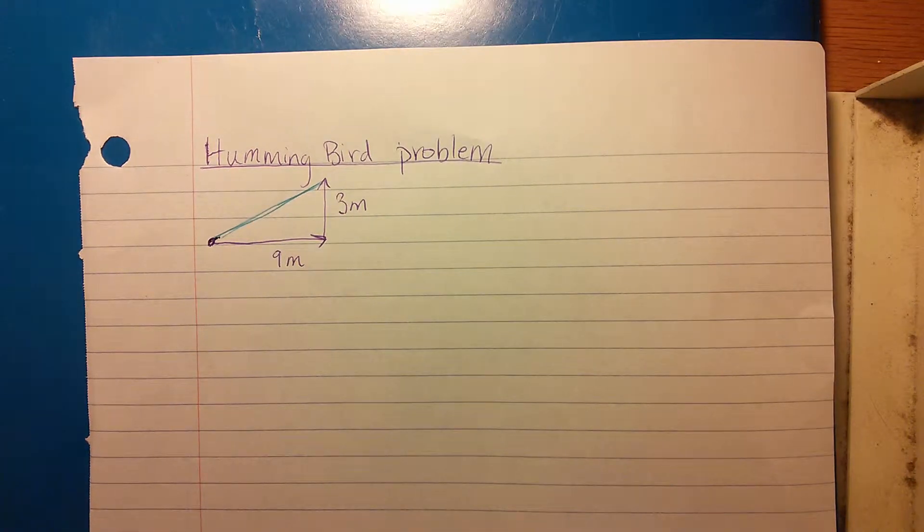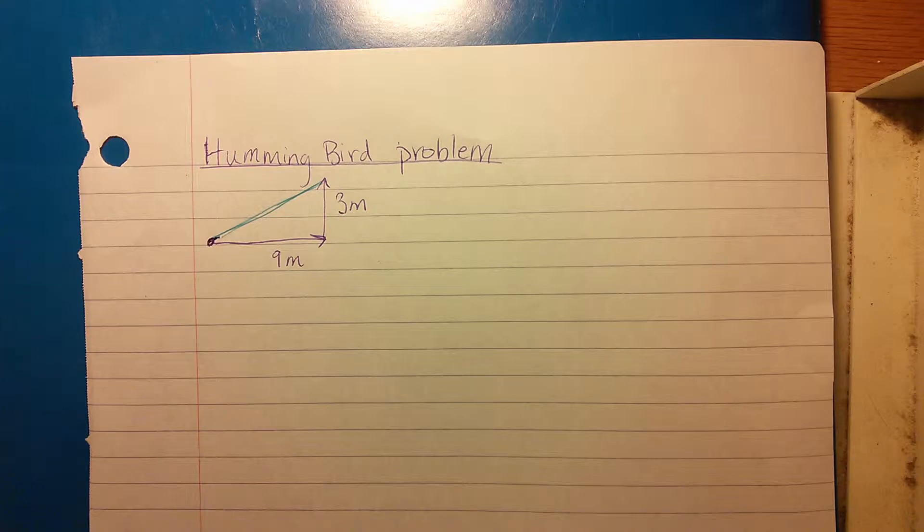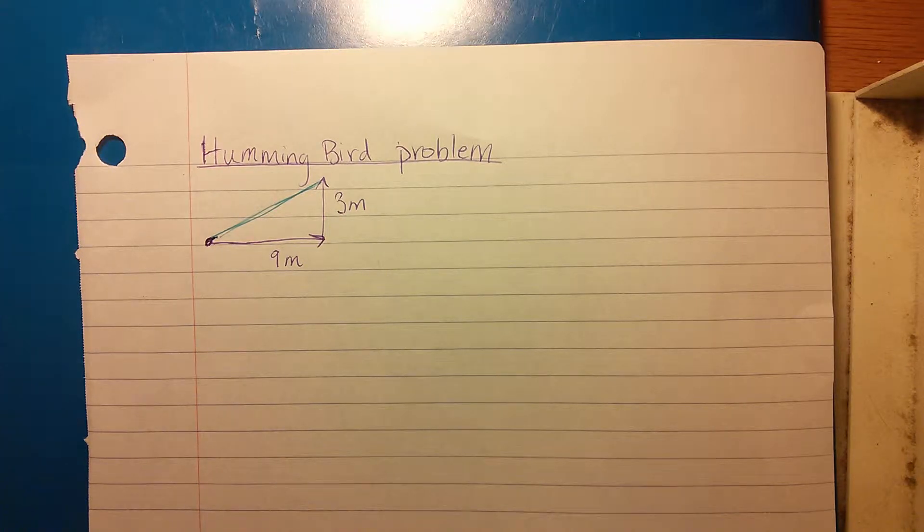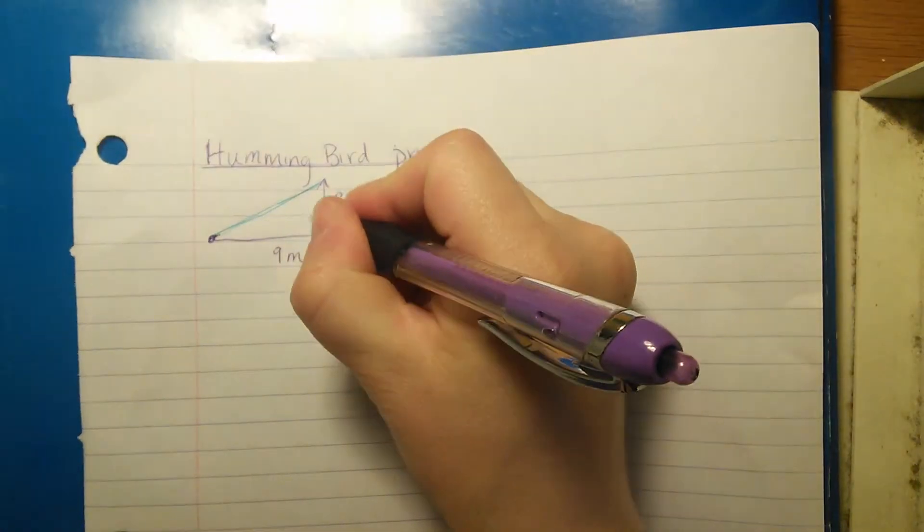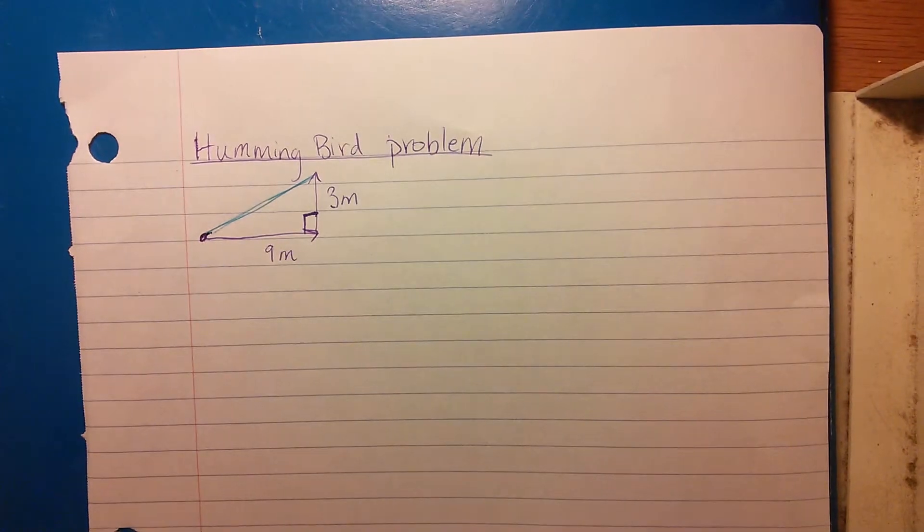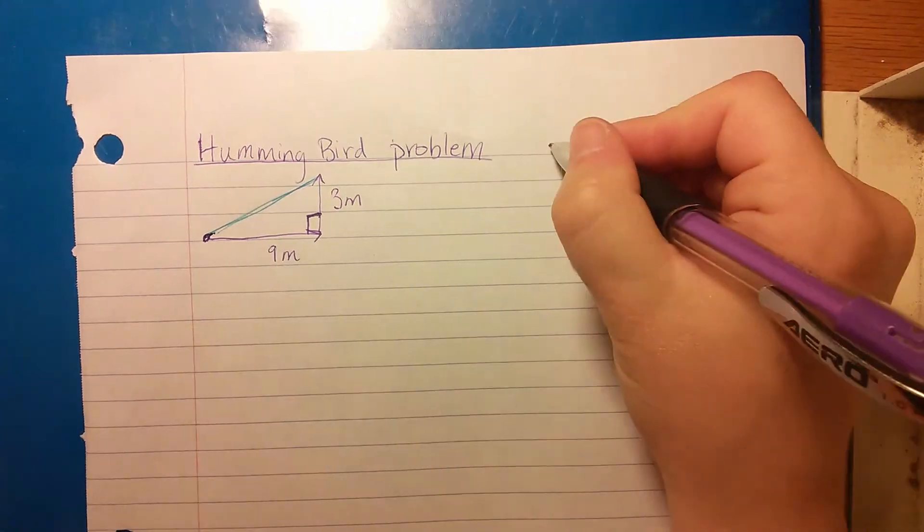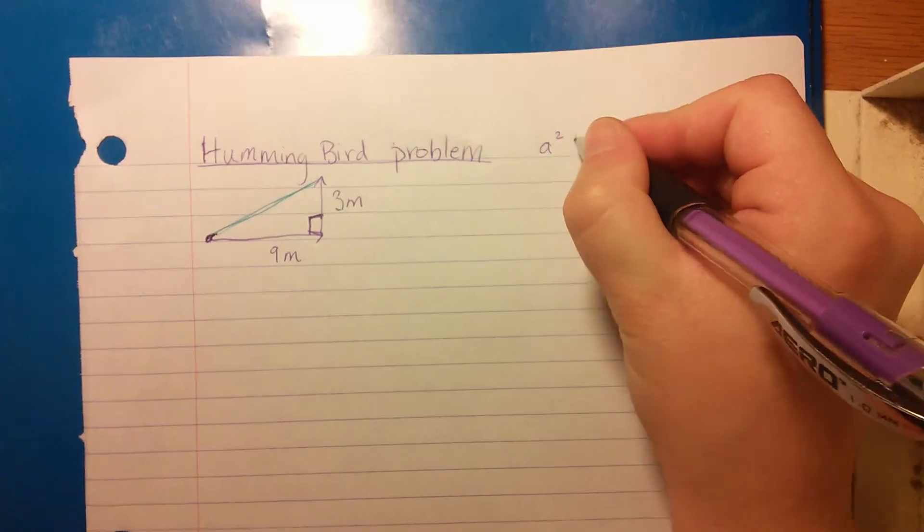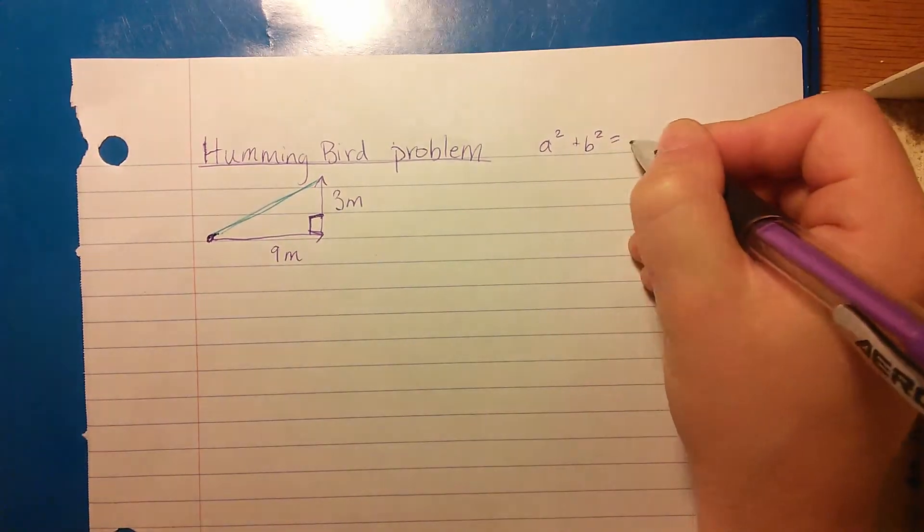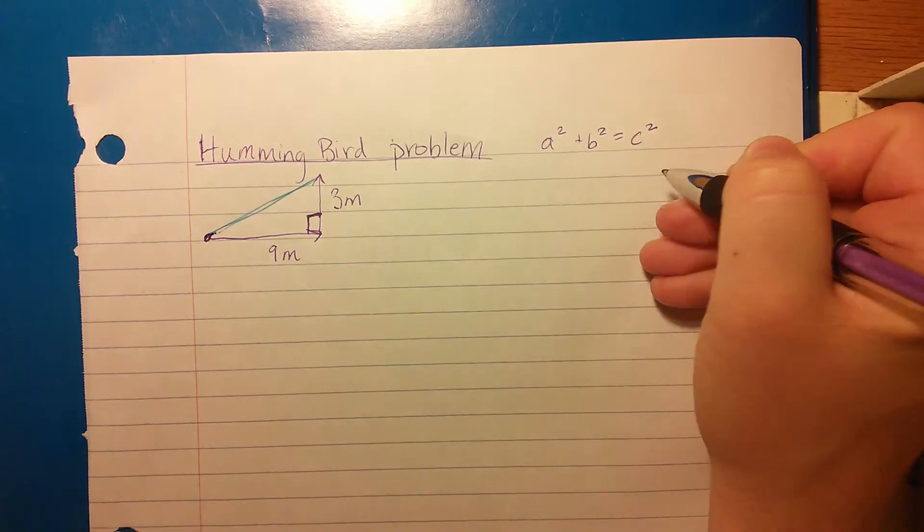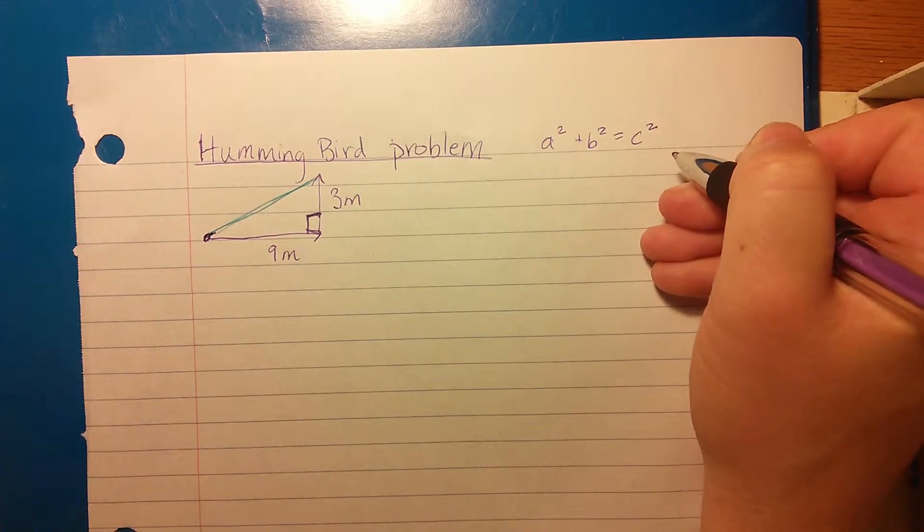We want to find both the magnitude and the direction. Finding the magnitude is really easy. As you can see, this is a right triangle, so you can use the Pythagorean theorem. Remember, Pythagorean theorem is a² + b² = c².